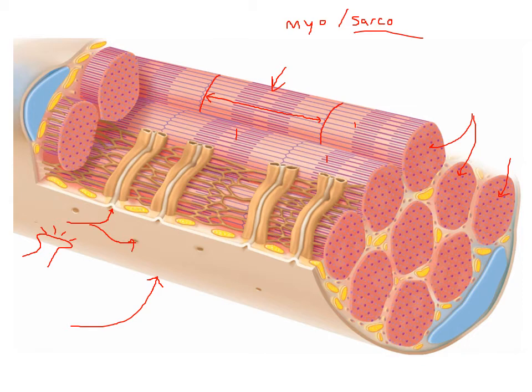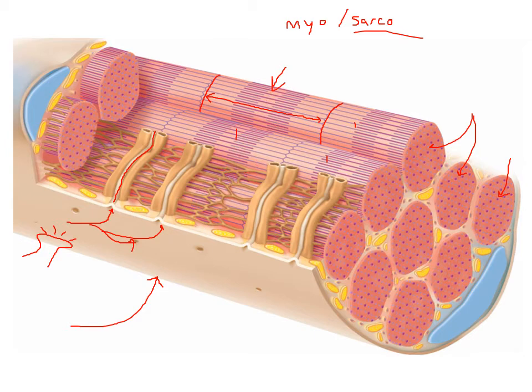As that electrical current passes through, it goes through these little indentations — these little tubes called transverse tubules, because they go into the cell and transverse across. As they go around, they wrap around these myofibrils. These myofibrils have transverse tubules going around them. The transverse tubule is carrying the electrical impulse deep into the cell. All the transverse tubule is, is a tube — a little straw that's an extension of the sarcolemma.